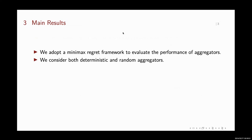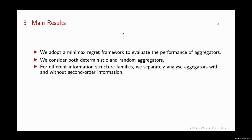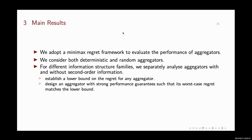We consider both deterministic and random aggregators. For different information structure families, we consider aggregators with and without signalling information. There are three steps: first, we establish a lower bound on the regret for any aggregator; then we design an aggregator with strong performance guarantees such that its worst-case regret matches the lower bound; and then we discuss whether signalling information can help better aggregation.